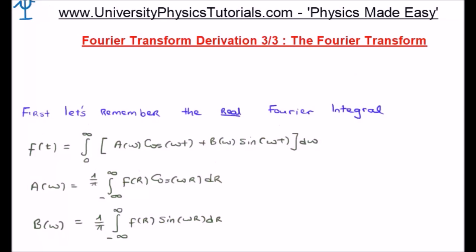In video number two of three I discussed the real Fourier integral and this amounted to extending the period of the Fourier series from L to infinity. In doing so the summation inside the Fourier series became an integral, so the series went from zero to infinity and the integral now became from zero to infinity also.